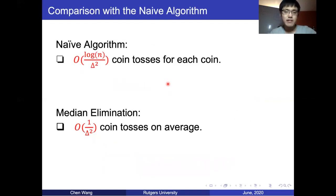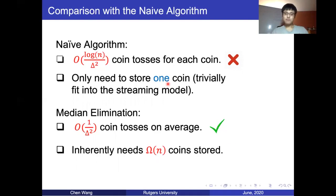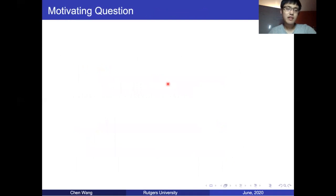Looking at the algorithms we have: the naive algorithm does not have optimal sample complexity, but it can be straightforwardly integrated into the streaming model — we can on the fly replace the stored coin if it is defeated, solving the streaming coin tossing model by storing only one coin. On the other hand, the median elimination algorithm has optimal sample complexity, but it inherently needs to store all coins.